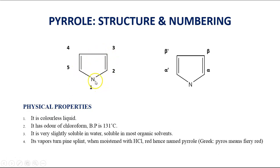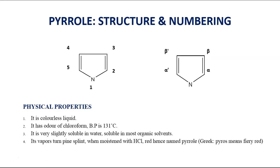You can either number it clockwise or anticlockwise — it is one and the same. Another way of numbering the Pyrrole ring is by alpha and beta position. The carbon immediately attached to the heteroatom gets the alpha position, whereas the carbon attached to the alpha carbon gets the beta position. Similarly, the other side will be alpha-dash and beta-dash.